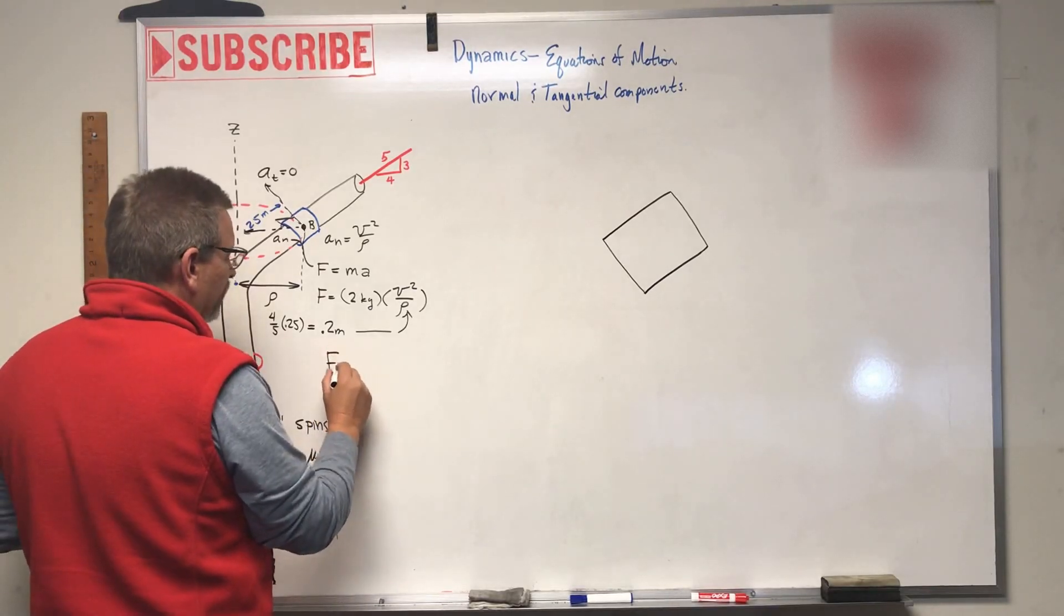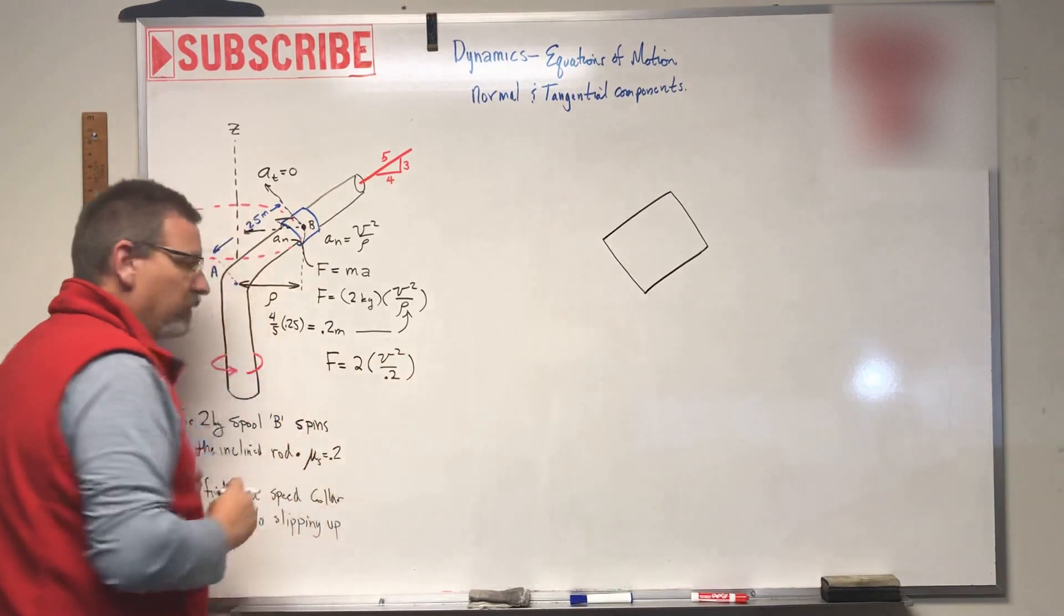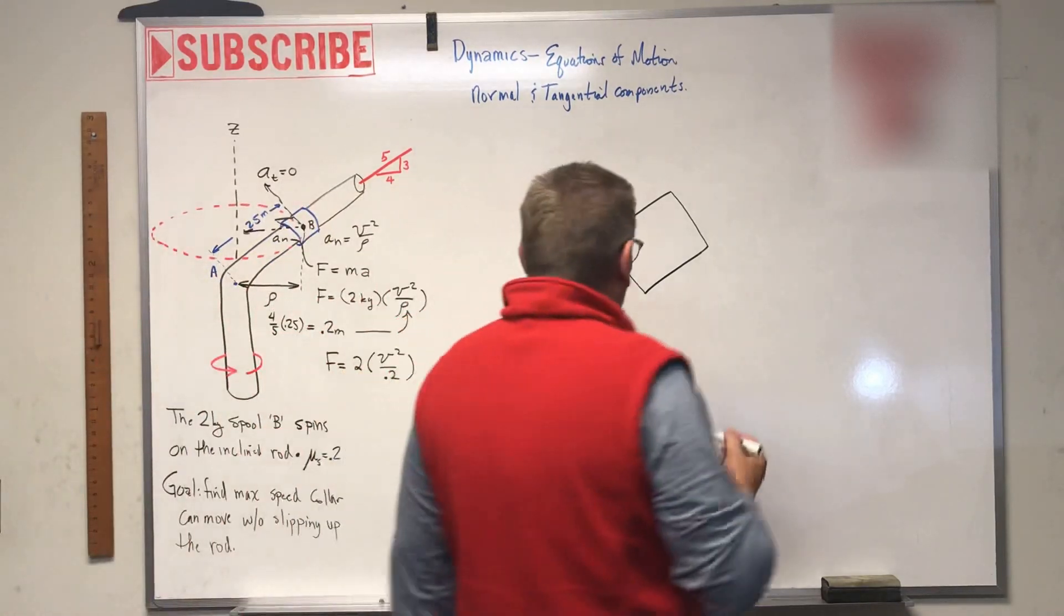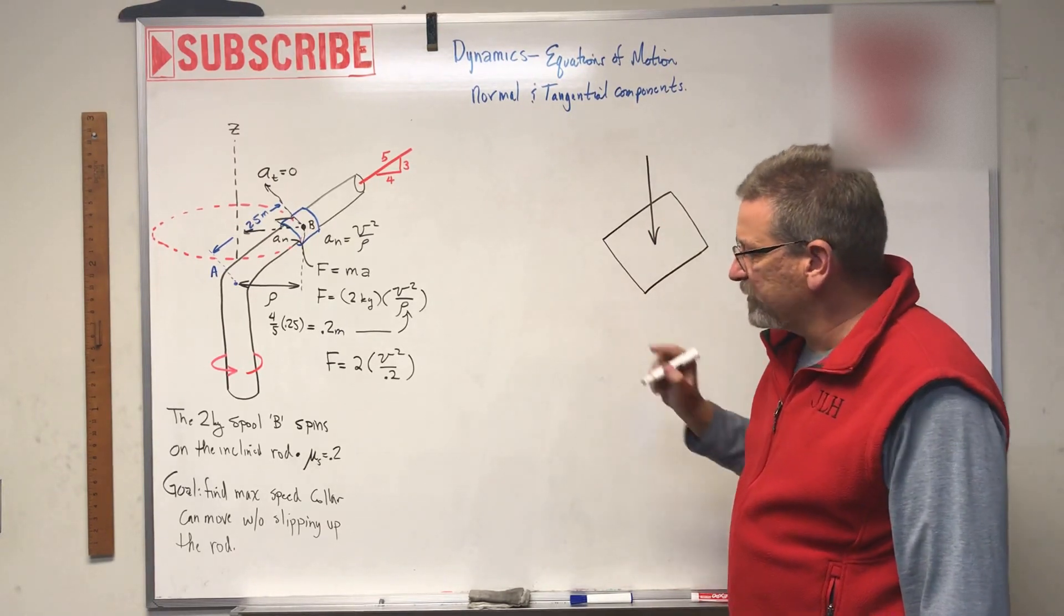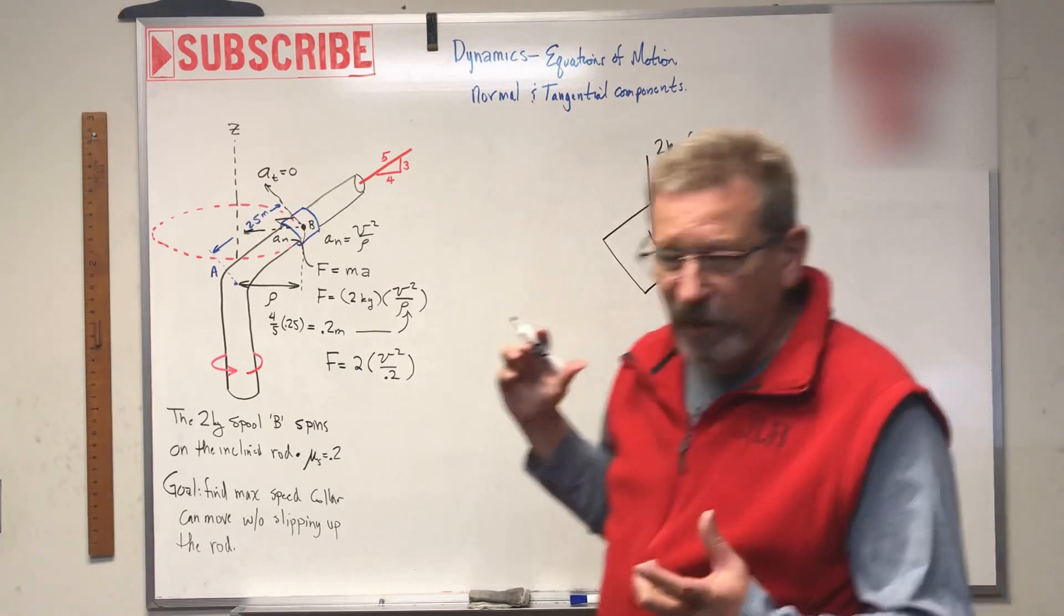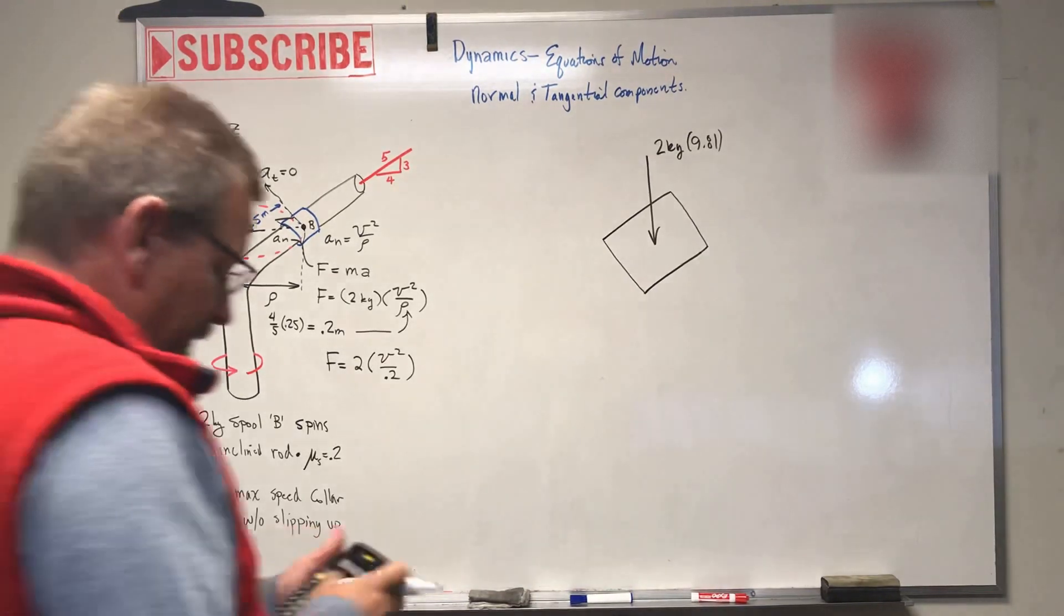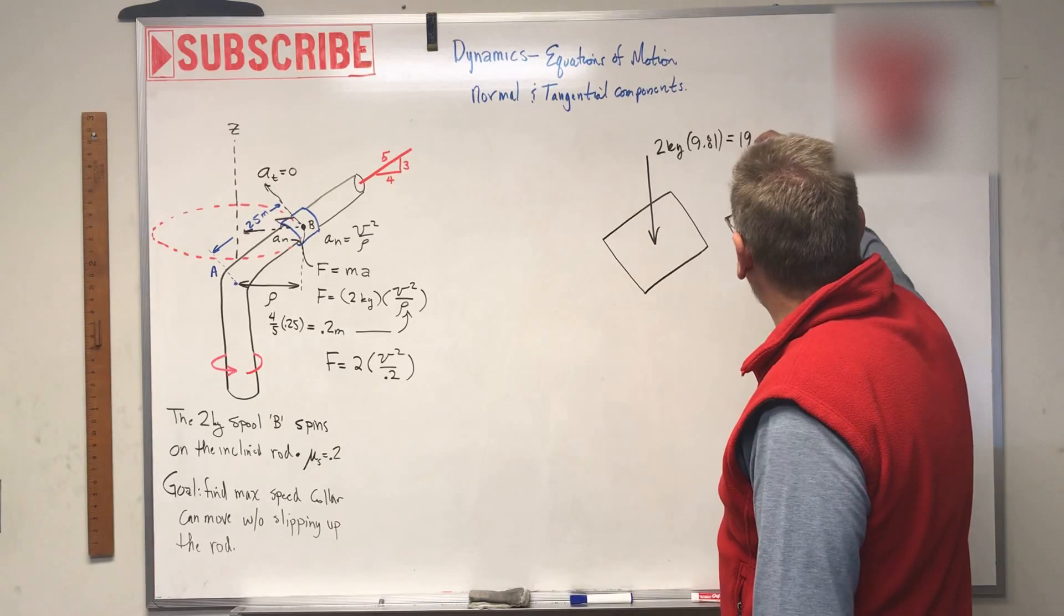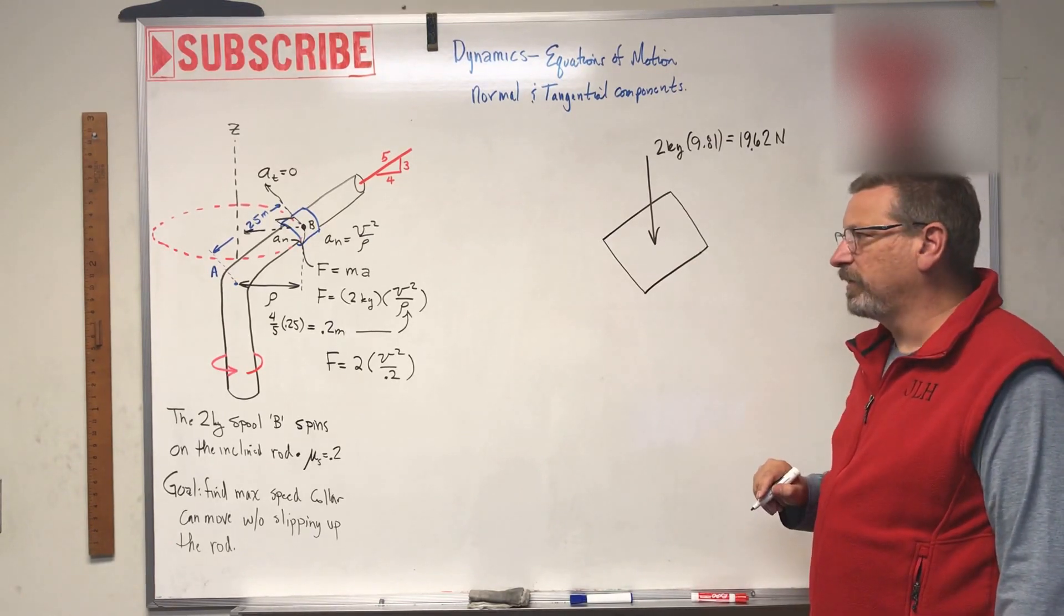So the centripetal force is equal to 2 kilograms times v squared over 0.2. So let's go back over here and let's look at our free body diagram of the collar. What's acting on the collar? On the collar is this. Number one, gravity sucks. The weight of the collar, which is 2 kilograms times 9.81, is 19.62 Newtons.